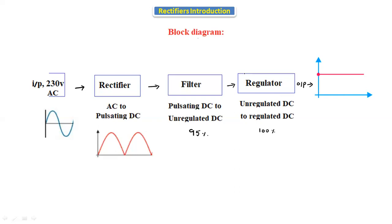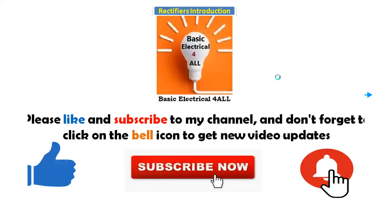Finally, after all stages we get pure DC — direct current. AC, alternating current, is converted into direct current using rectifiers, filters, and regulators. In the next class we will discuss the half-wave rectifier, full-wave rectifier, and bridge rectifier in detail.